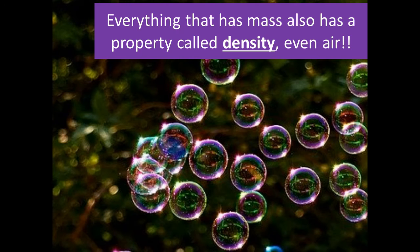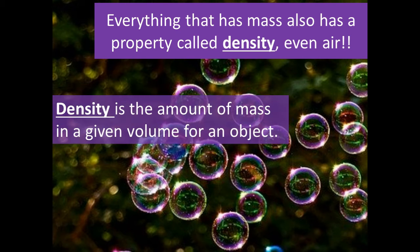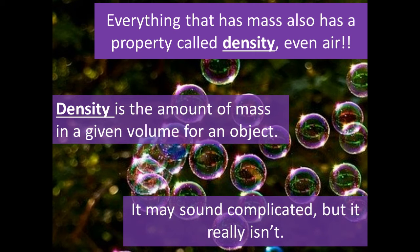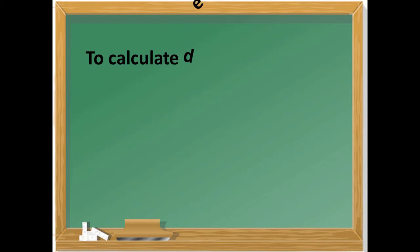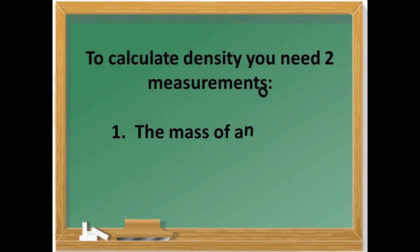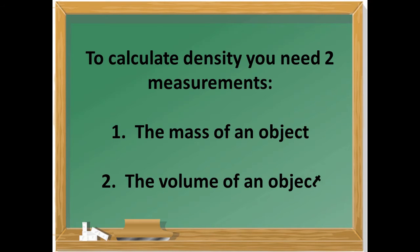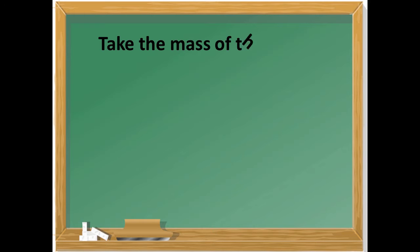Everything that has mass also has a property called density — even air. Density is the amount of mass in a given volume for an object. It may sound complicated, but it really isn't. To calculate density, you need two measurements: first, the mass of an object; second, the volume of an object.